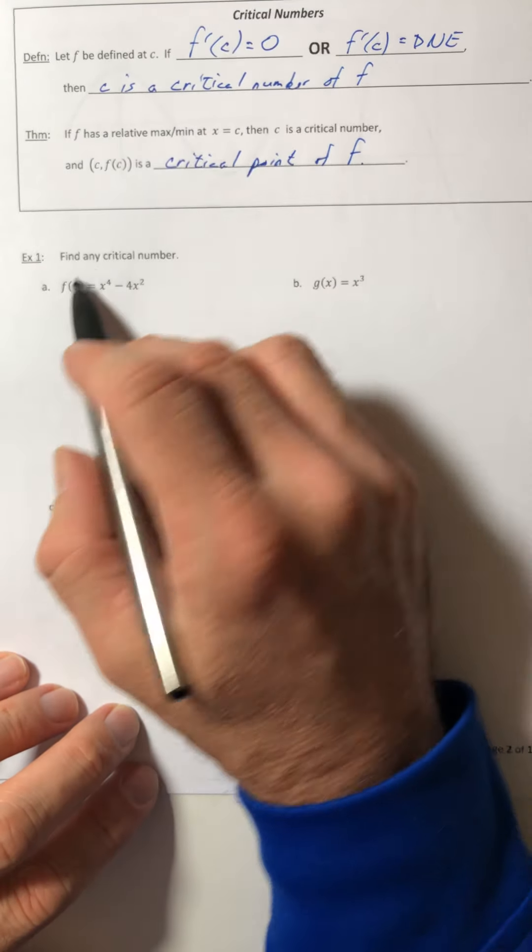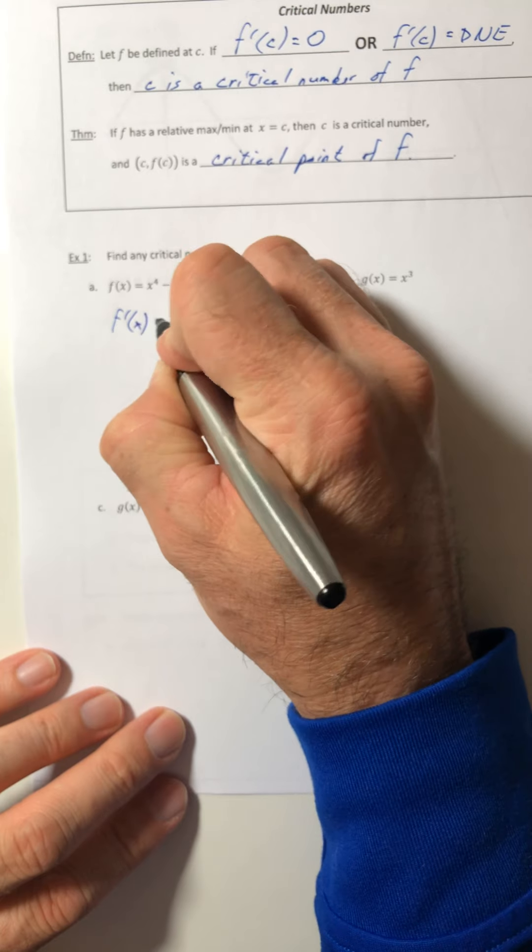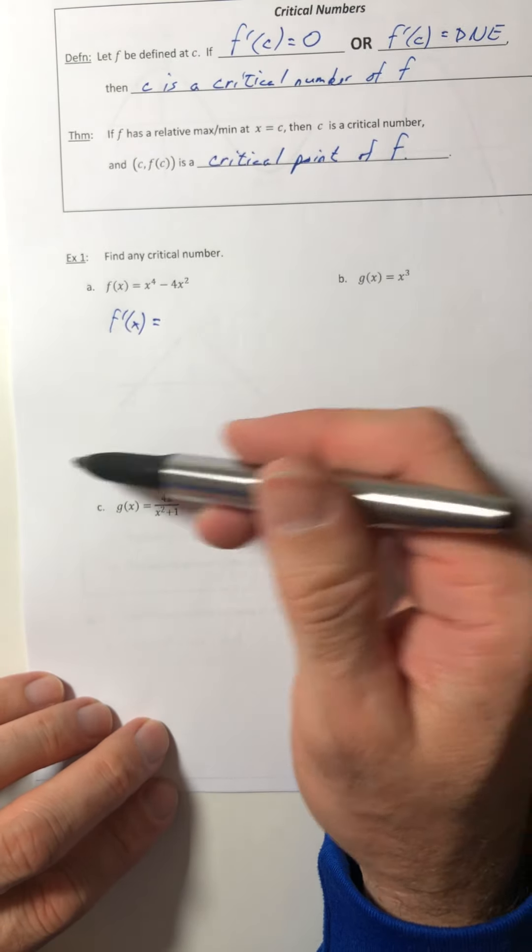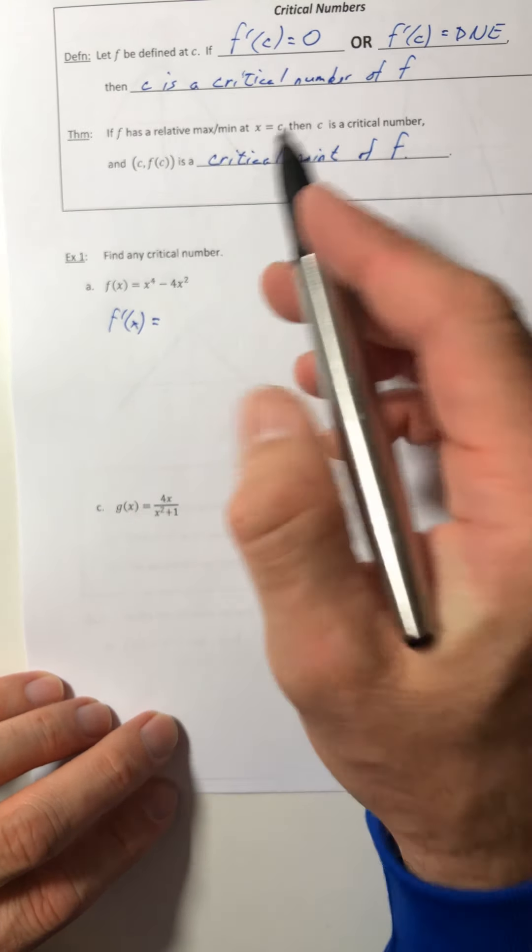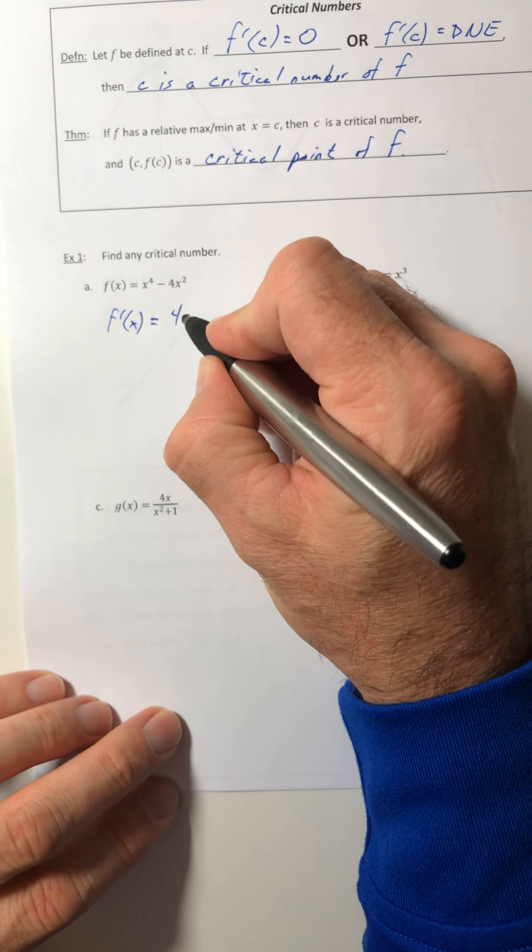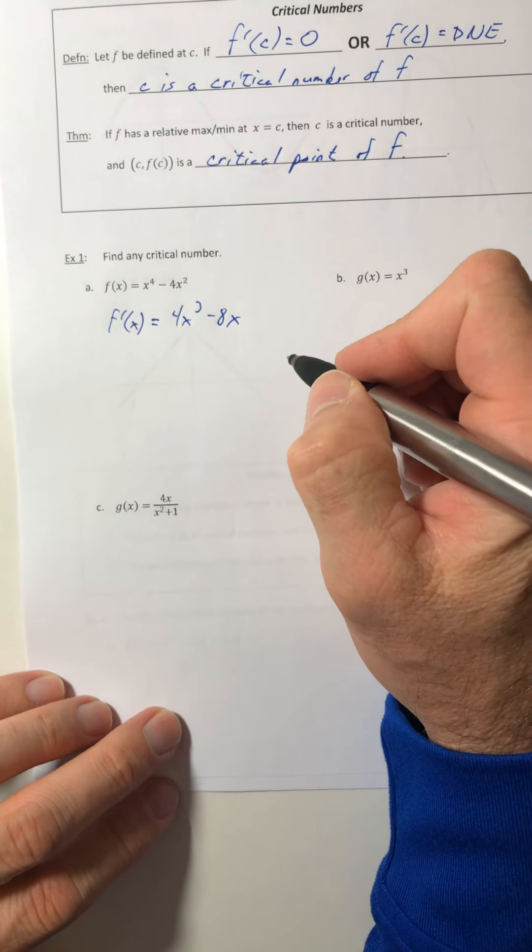So the first thing we need is the derivative of your function. Which is why we learned all those derivative rules, because now you have to know how to find the derivative to get other stuff. So the derivative of this, 4x³ minus 8x.